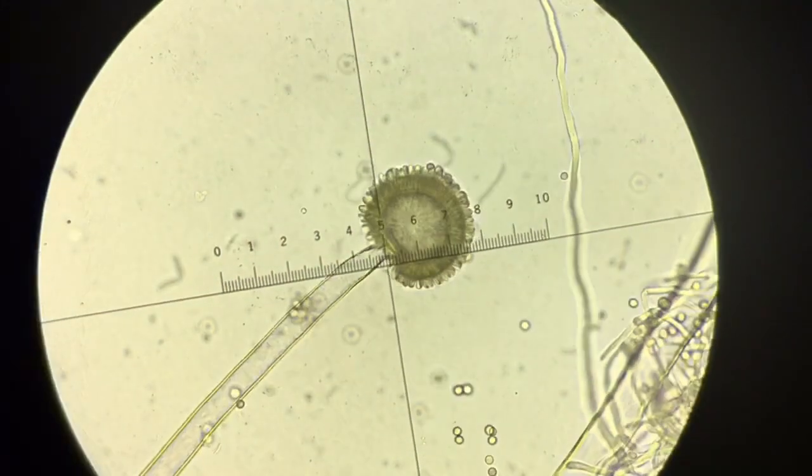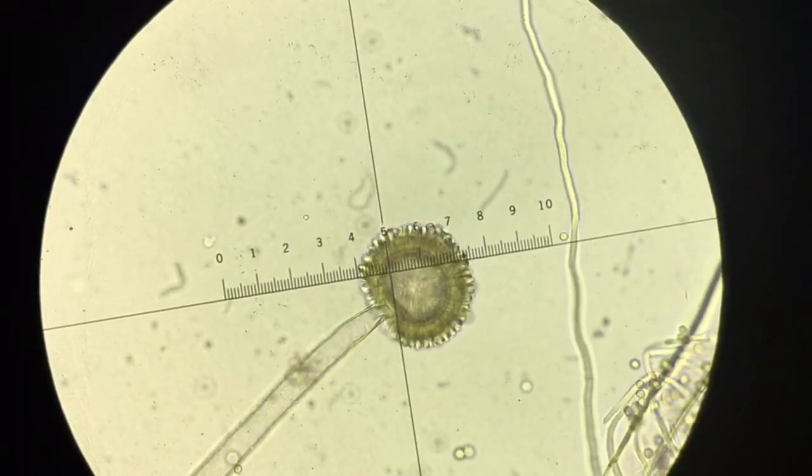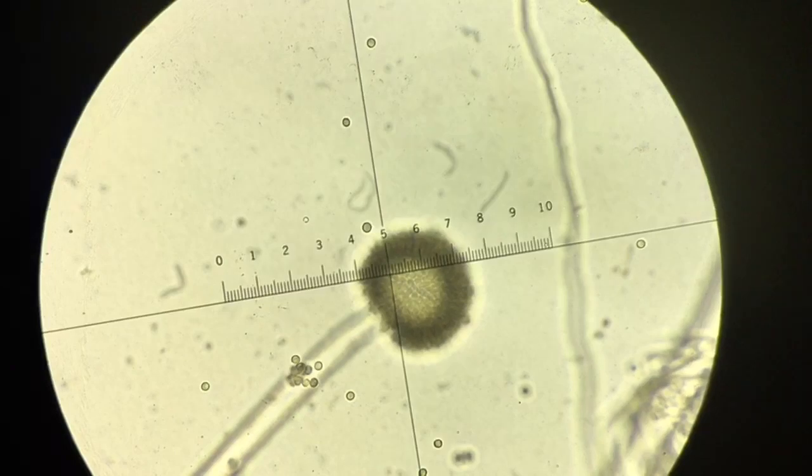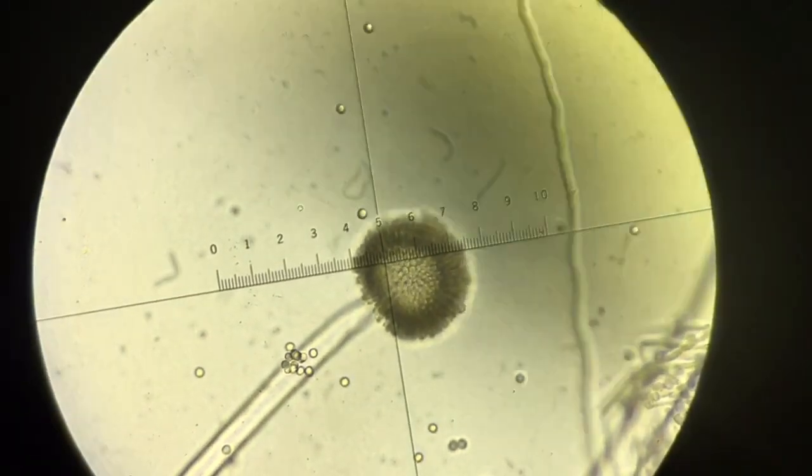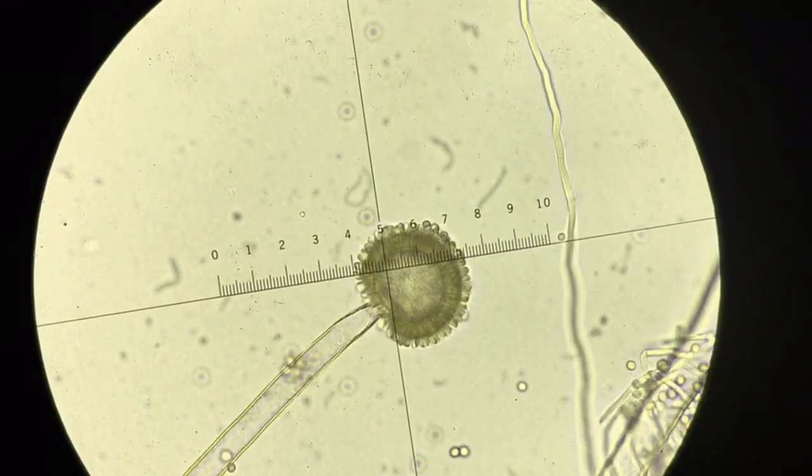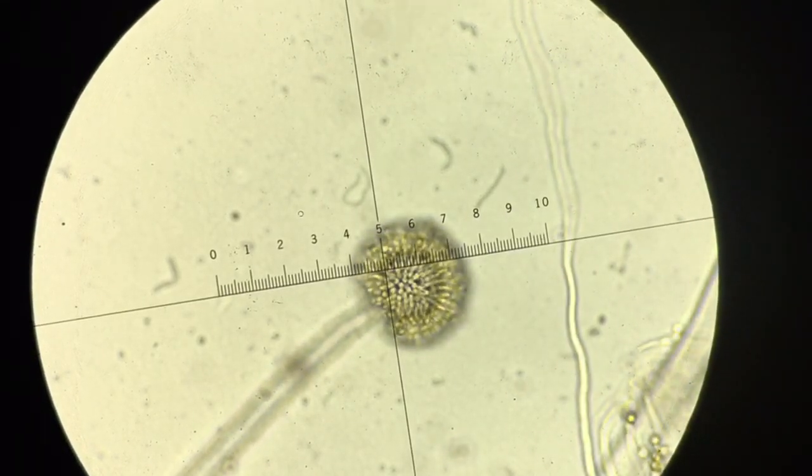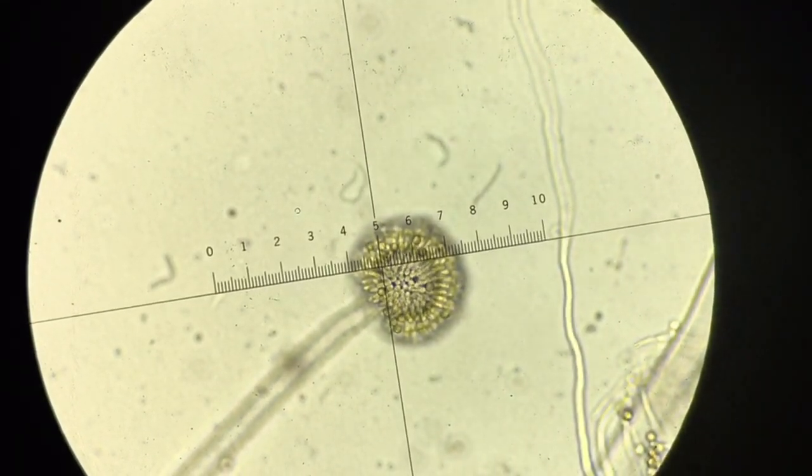In Aspergillus and Penicillium, both phialides are tubular structures that produce spores by basically forming an outer layer, the cell wall, and then filling it with material and then capping it at the end. That produces the spore.